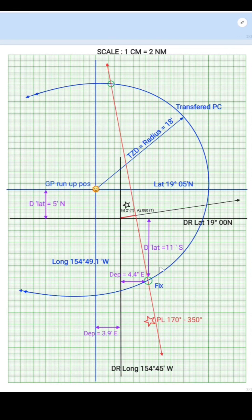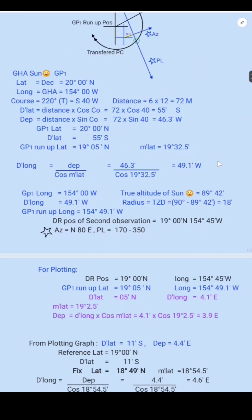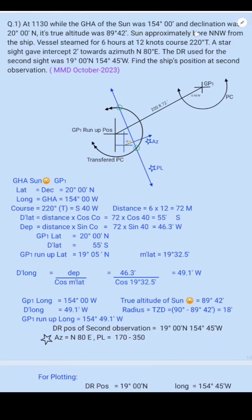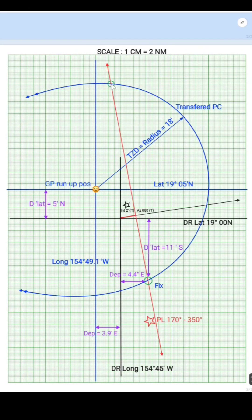The transfer PC intersects the PL at two points — this point and this point. So the vessel could be at either position. But in the question it is given that the sun approximately bore NNW from the ship. If the vessel's position is at one point, the sun's bearing cannot be NNW from there, so that position is ruled out. If the vessel's position is at the other point, the sun is here, so the sun bore approximately NNW from the vessel. This confirms the fix.